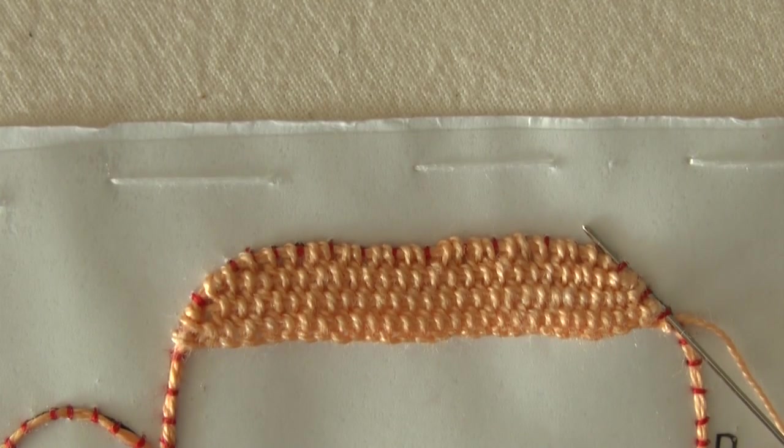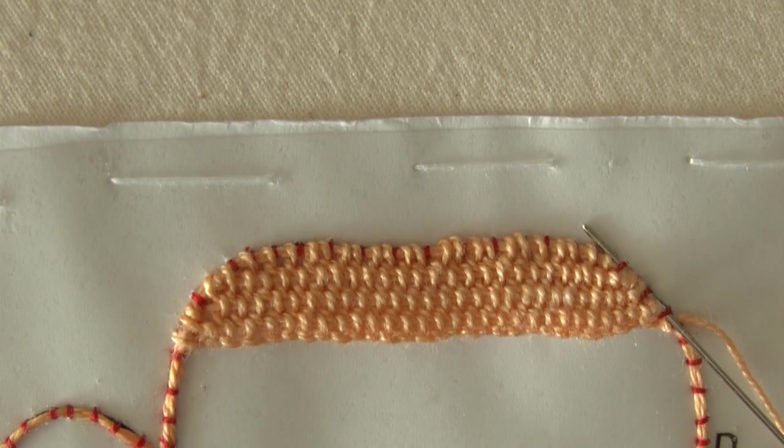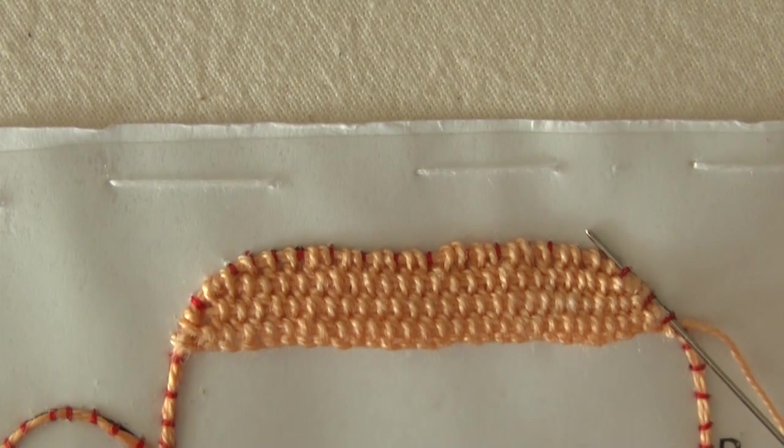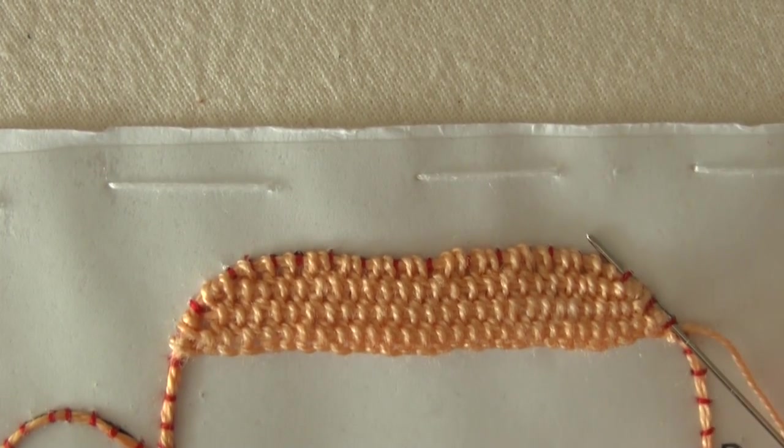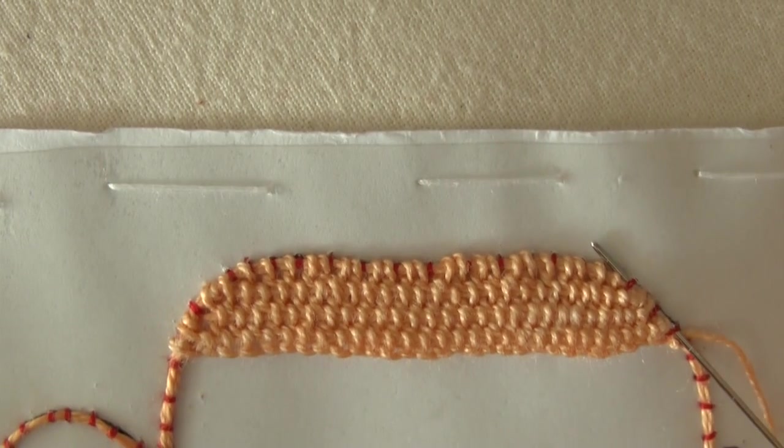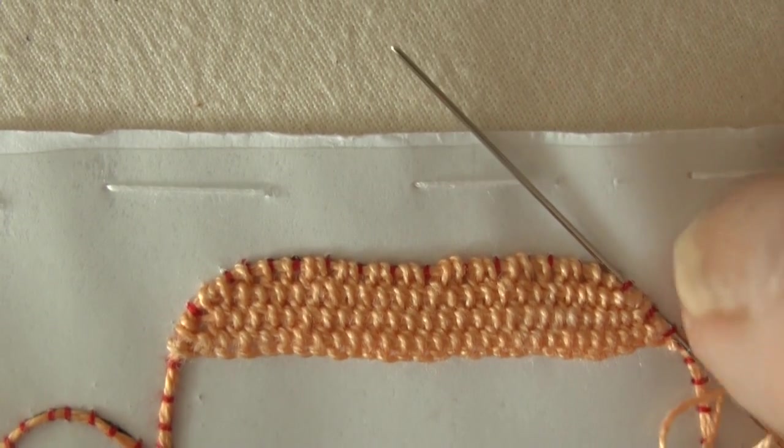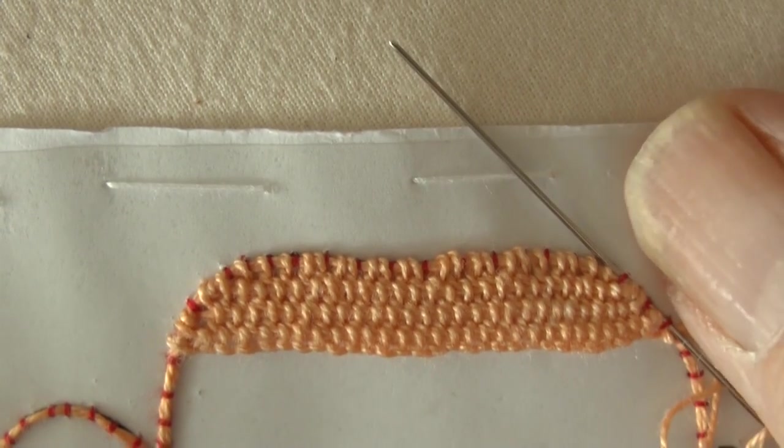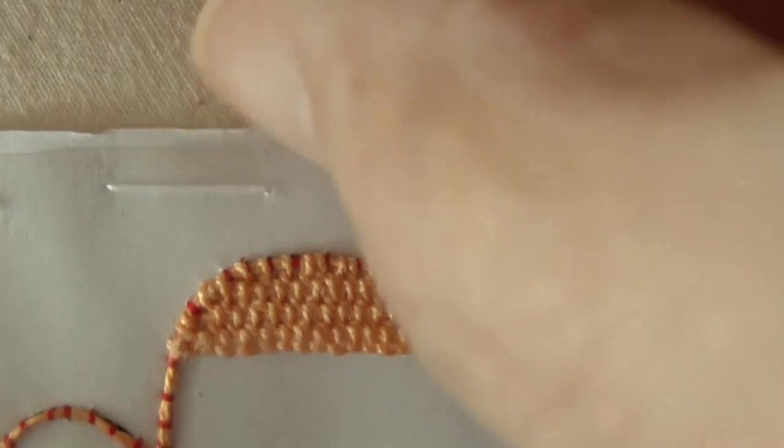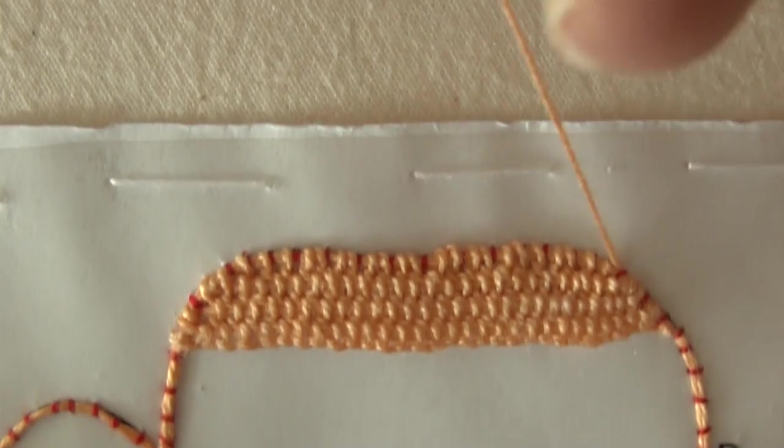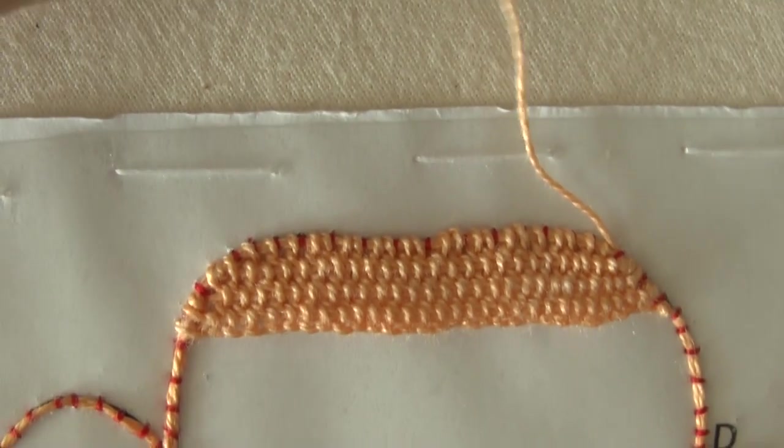I've come to the end of the fourth row and my thread has run out, so I've done the two loops around the coordinate to finish the row off. Now I'm just going to push the thread up through these couching stitches up the side here, and then I can cut that off.